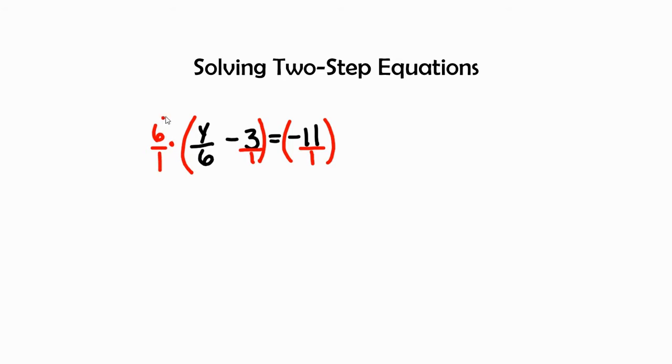Now, let's go ahead and by using distributive property, we are going to distribute 6 over 1 to both sides of the equation.